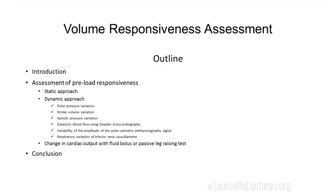The outline of the talk will be: introduction, assessment of preload responsiveness using a static approach and a dynamic approach. Within the dynamic approach, there are different techniques: pulse pressure variation, stroke volume variation, systolic pressure variation, measurement of stroke volume via echocardiogram, variability of the amplitude of the pulse oximetry plethysmography signal, and respiratory variation of the inferior vena cava diameter. We can also measure the change in cardiac output after a fluid bolus or a passive leg raising test, then we'll finish with conclusions.